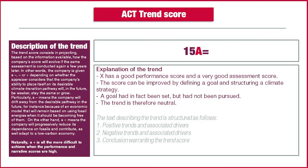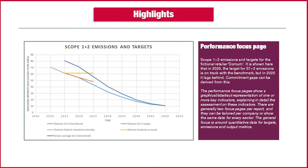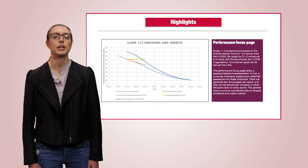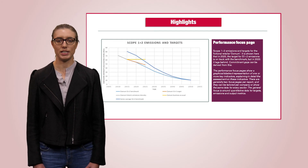There is a template for trend scoring, which will have text describing positive trends and associated drivers, negative trends and associated drivers, and a conclusion warranting the trend score. Whenever it's considered necessary and beneficial, the feedback report could extend into further detail on specific indicators, narratives, or other aspects that might have decisively influenced the ACT rating.